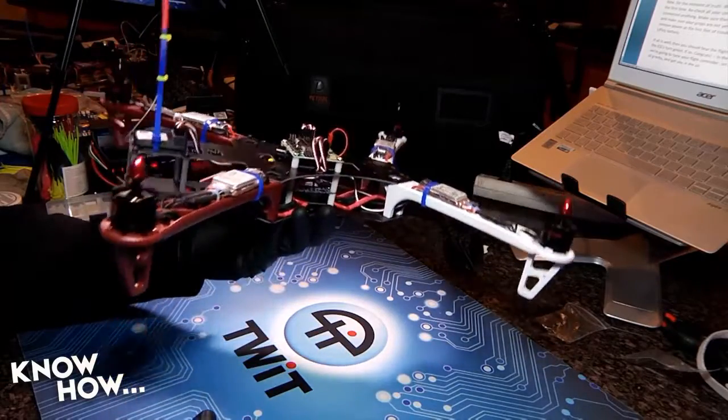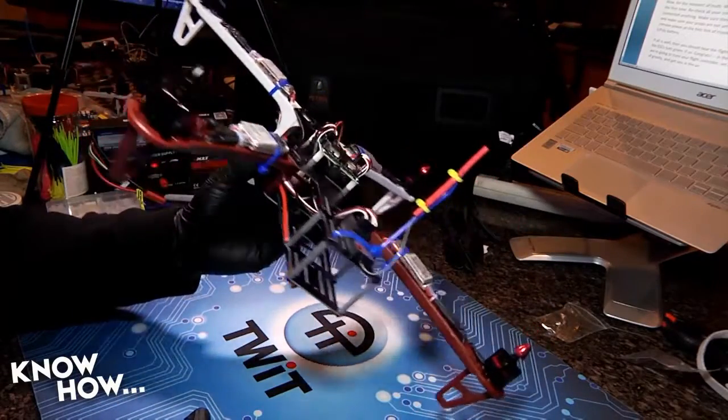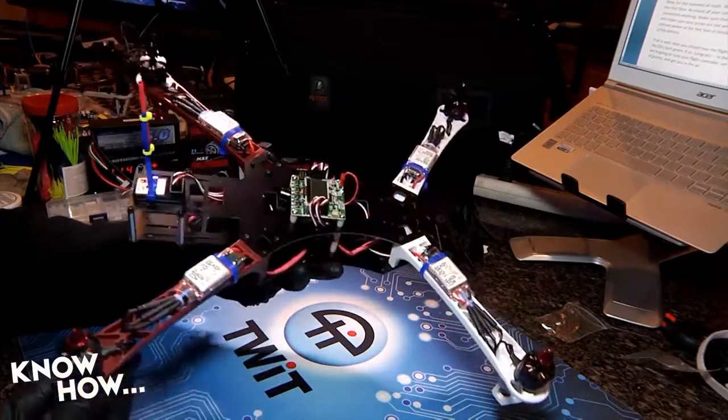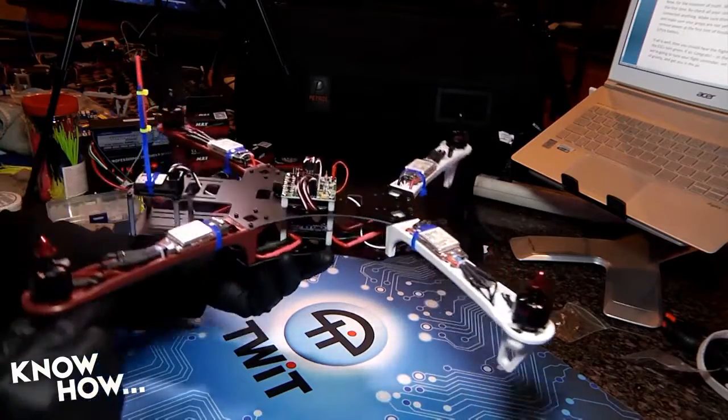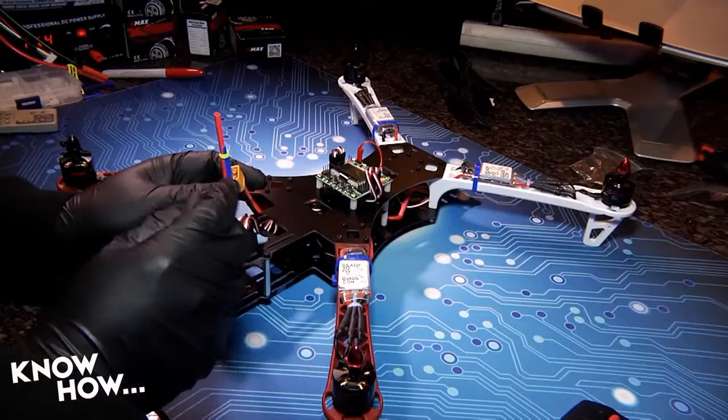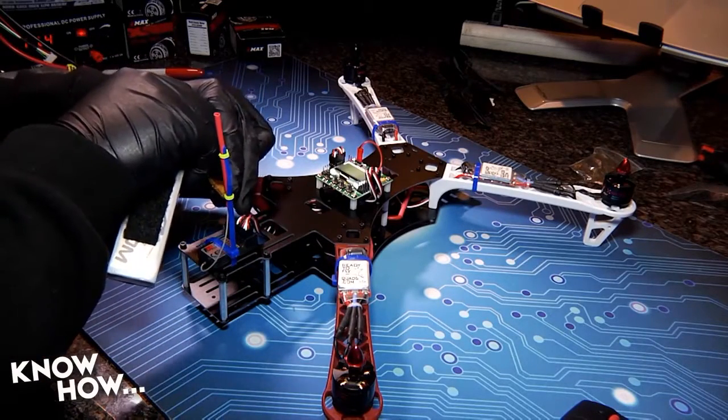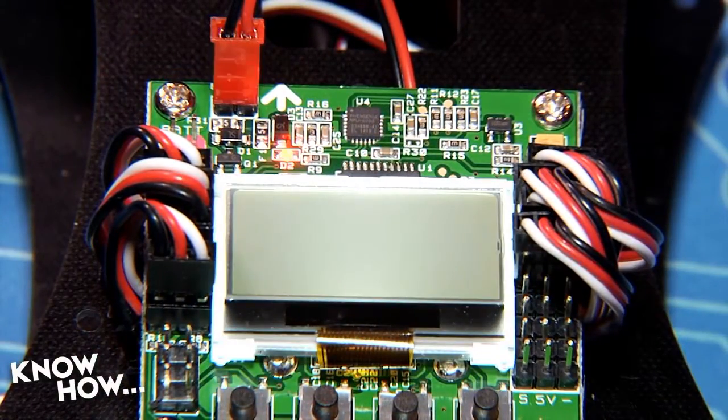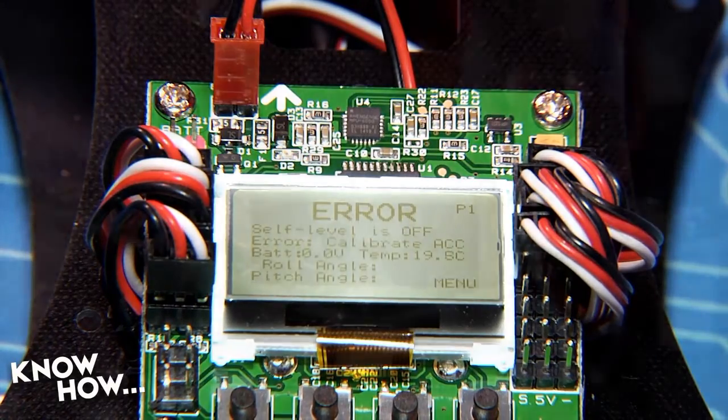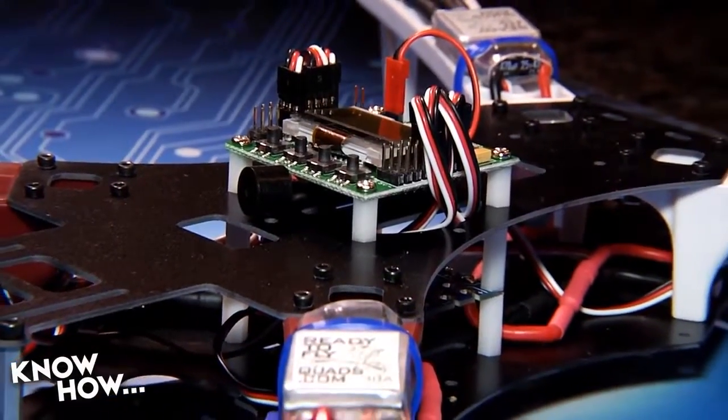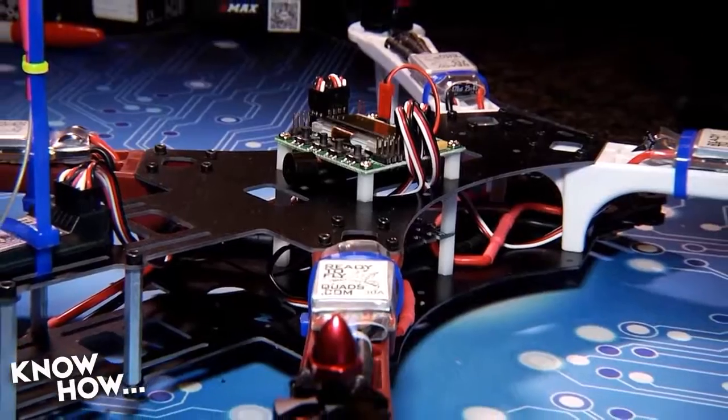Now for the moment of truth. We're going to connect power to the Alien X for the first time. Re-check your connections to make sure you haven't cross-connected anything, and make sure your props are not yet on the motors. Then, standing ready to remove power at the first hint of trouble or blue smoke, connect your XT60 power connector to a lithium-poly battery. If all is well, then you should hear the flight controller beep and see the LED screen light up. If so, congrats! There's still a lot to do. We need to calibrate the receiver, check the rotation of our motors and tune the craft, but we'll save that for the next episode of our 2018 Alien X build.